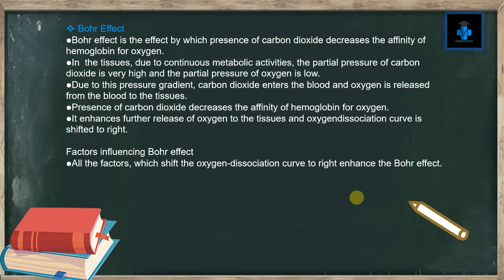Now let's learn about the Bohr effect. The Bohr effect is the effect by which the presence of carbon dioxide decreases the affinity of hemoglobin for oxygen. In the tissues, due to continuous metabolic activities, the partial pressure of carbon dioxide is very high and the partial pressure of oxygen is low. Due to this pressure gradient, carbon dioxide enters the blood and oxygen is released to the tissues. Presence of carbon dioxide decreases hemoglobin's affinity for oxygen, enhancing further release of oxygen to the tissues and shifting the oxygen dissociation curve to the right.